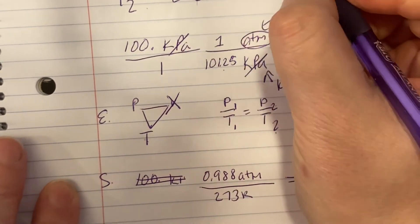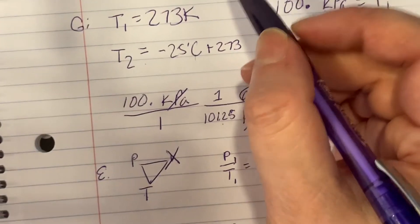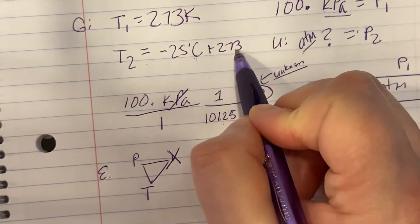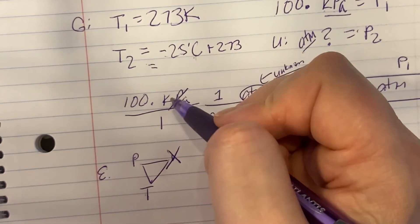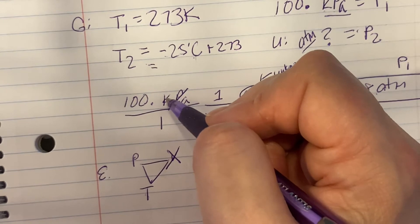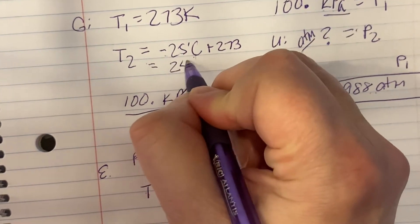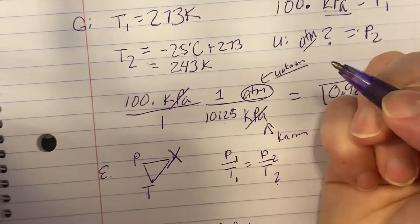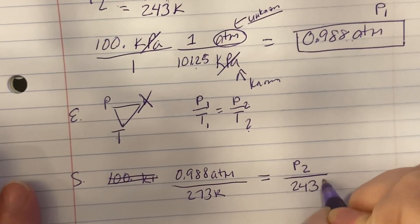If I have Celsius to get to Kelvin, I just add 273. Make sure you notice this is negative 25, so make sure you put that in there correctly to get the right answer. So it's going to be 248 K is my temperature 2.